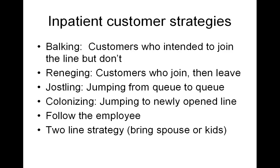Impatient customers use various strategies. They will balk — balking customers are those who intended to join the line and then don't. Reneging customers are people who join the line and then leave because they figure the line is not moving fast enough. Jockeying is jumping from one queue to the next — if you're in one line and another seems to be going faster, you jump over and join that queue.